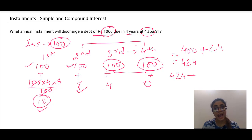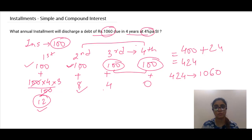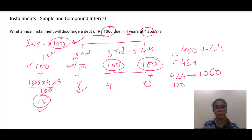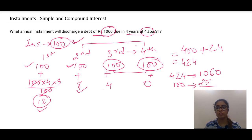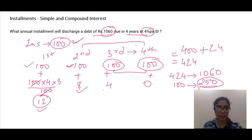Our debt is 424 when installment is 100, but the actual debt is 1060. So the actual installment = 100 × 1060/424 = 250 rupees. The actual installment to be paid is 250 rupees.